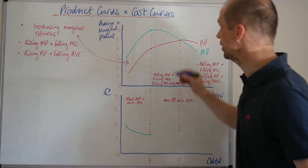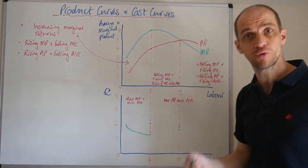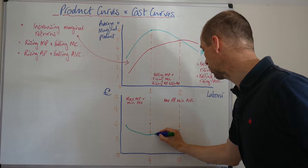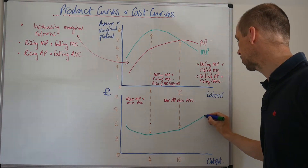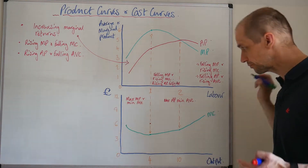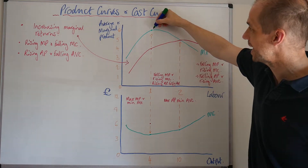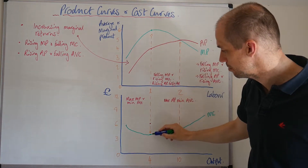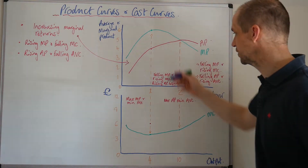When the marginal cost is at its lowest, the marginal product will be at its highest. We then see the marginal cost beginning to rise. We can see this relationship between the maximum marginal product and the minimum marginal cost quite clearly.